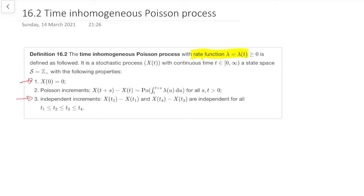If we look at the three numbered points in the definition: Number one, that we start from zero is just the same as before. Number three, that we have independent increments when those increments are not overlapping, that's the same as we had before.